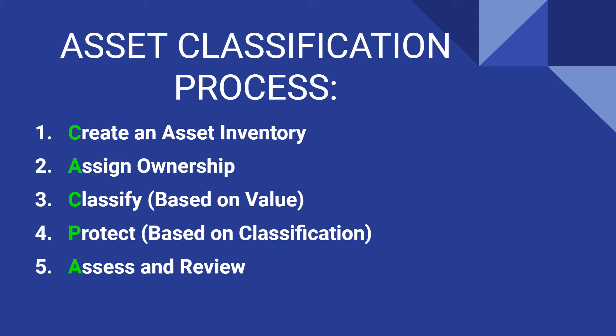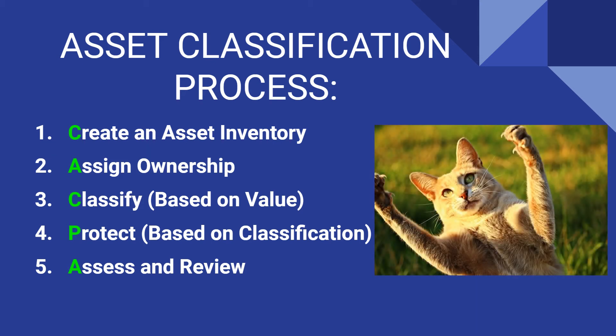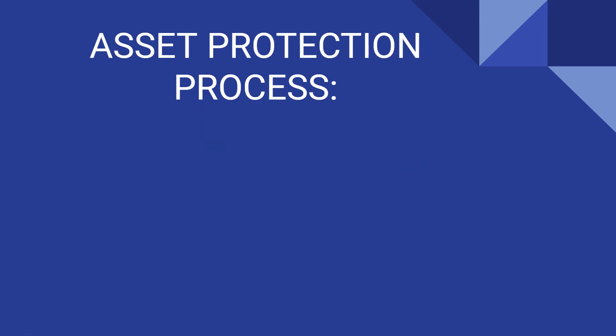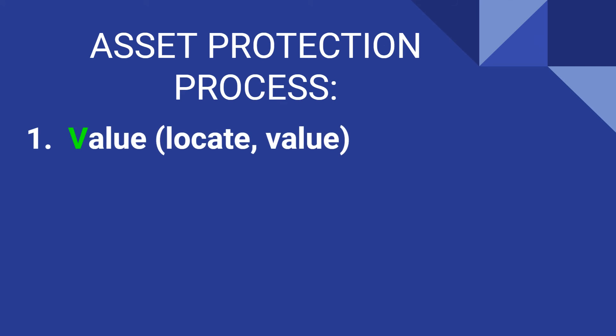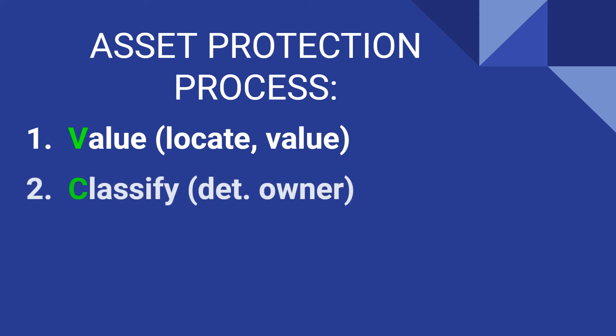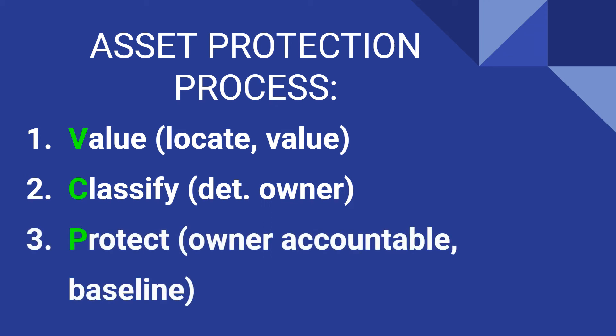You can remember the entire process with the acronym CACPA, or CATPA, as the image shows here. The asset protection process is related to the classification process and has the following steps. First, valuation — this is where the asset is located and the value is assigned. Then the asset is classified and an owner is determined, and remember that this step relies on the value. The next step is to protect it based on its classification. This is also where the baseline is established and the owner is held accountable for the protection of it.